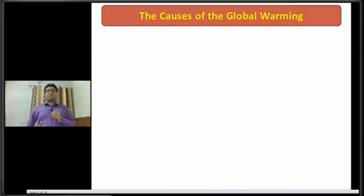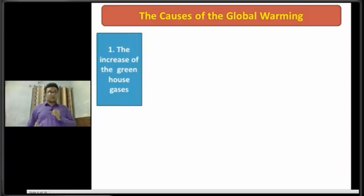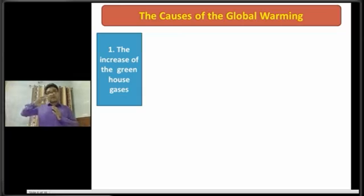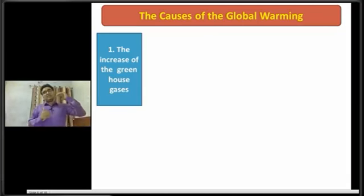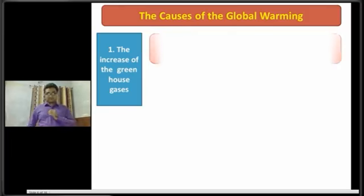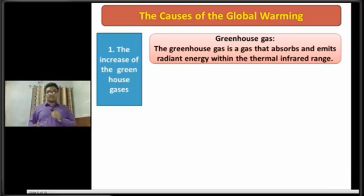Dear students, now I am going to discuss about the causes of global warming. The first cause is the increase of greenhouse gases. Greenhouse gases are minor gases that increase the temperature of the atmosphere. The greenhouse gas is a gas that absorbs and emits radiant energy within the thermal infrared range.